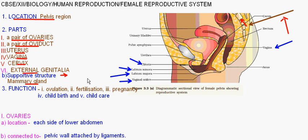Now coming to the functions of the female reproductive system. First, ovulation — that is the production of an ovule. Second, fertilization — the fusion of male and female gametes, that is sperm and ovum. Third, pregnancy — due to fusion of male and female gametes, first a zygote forms, from which an embryo is developed, which further develops into a fetus inside the uterus. And finally, childbirth and childcare. Mammary glands and hormones are directly involved in this process.